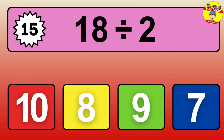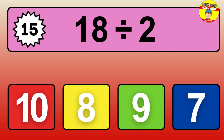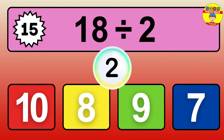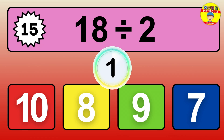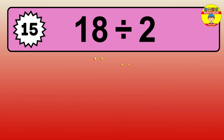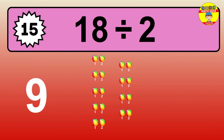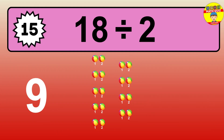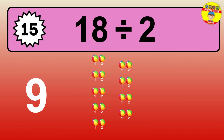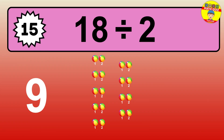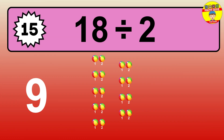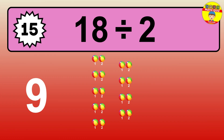18 divided by 9 — time to think. Let's go to the solution. Divide the number 18 by 9. Each group contains 9 units, so dividing 18 by 9 results in 2 equal groups. Thus, the result is 18 divided by 9 equals 2.